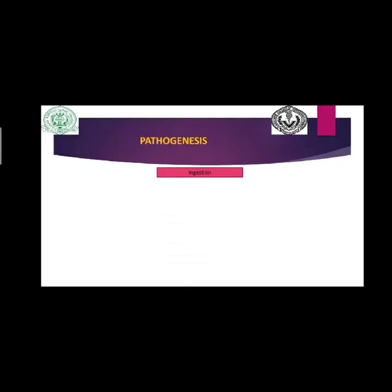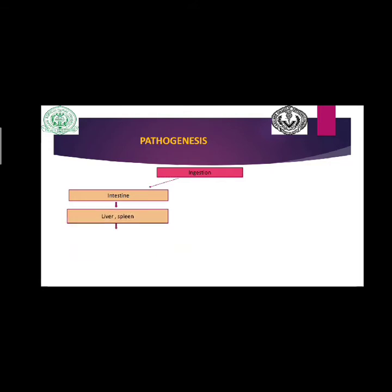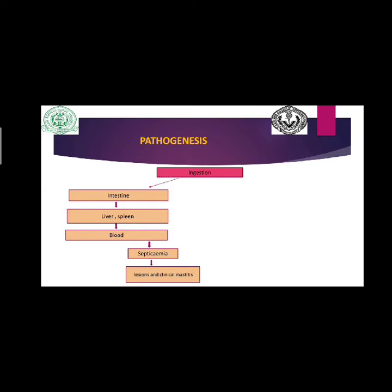The bacteria enter through ingestion, then go to the intestine where they localize in the intestinal mucosa and cause bacteremia. From there, they travel to the liver and spleen, then enter systemic circulation and lodge in various organs, causing fatal septicemia. After causing septicemia, they produce lesions in various organs and the bacteria may also cause clinical mastitis.